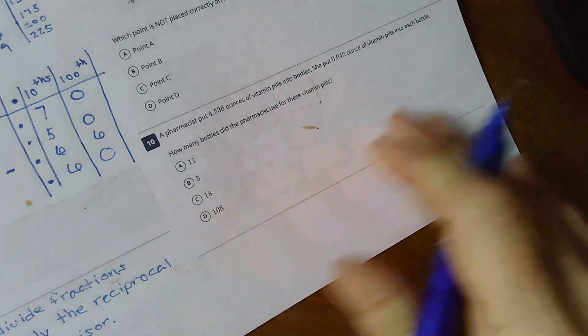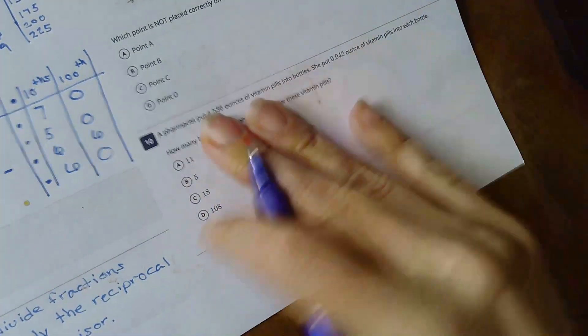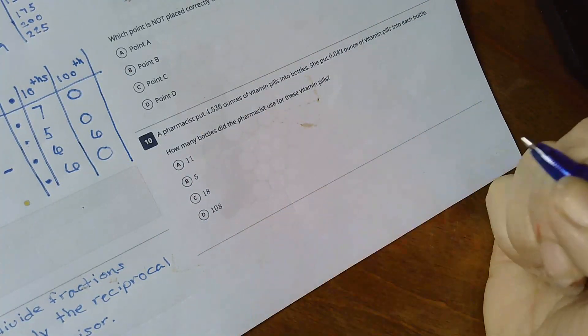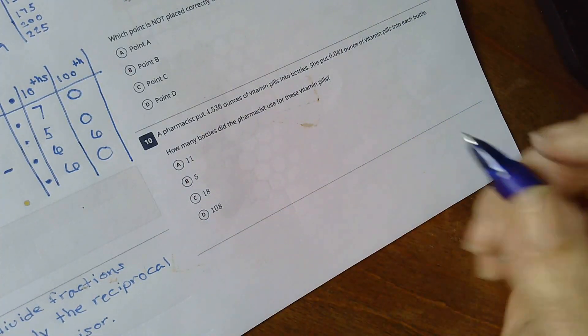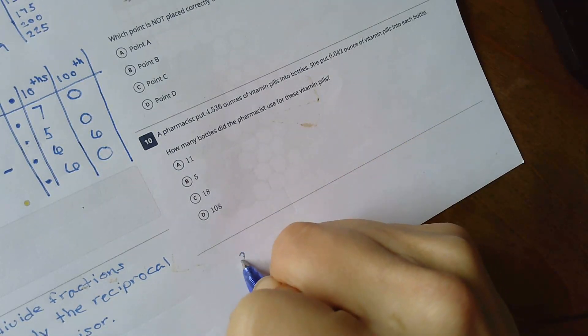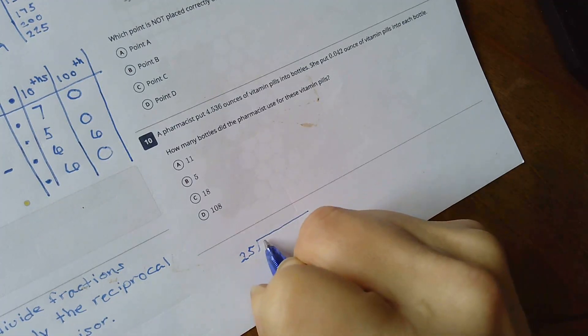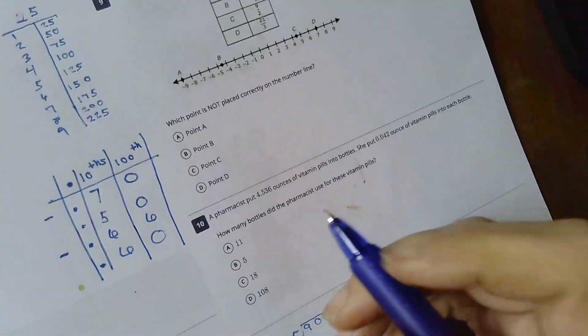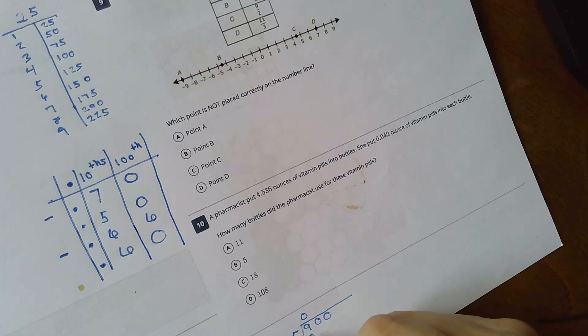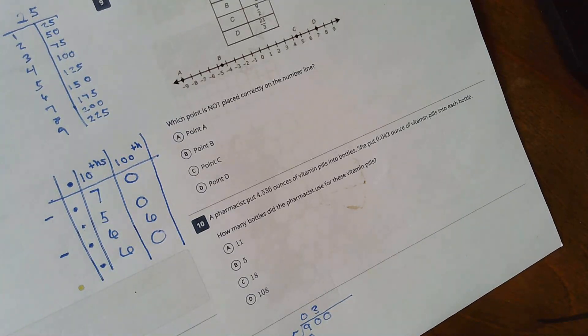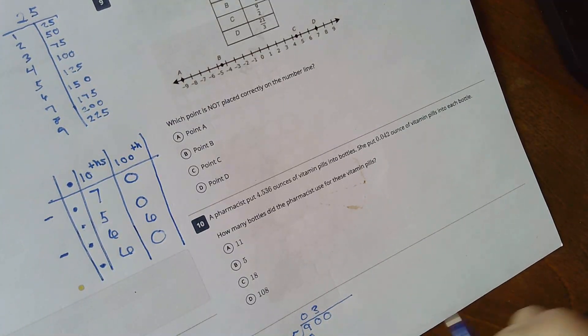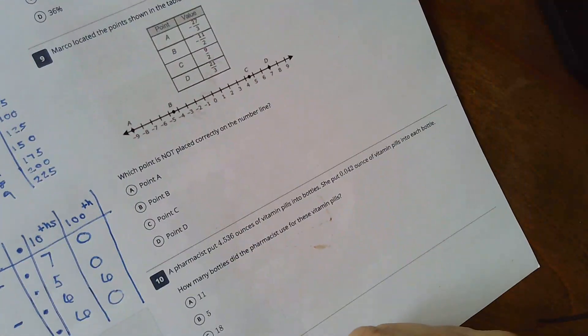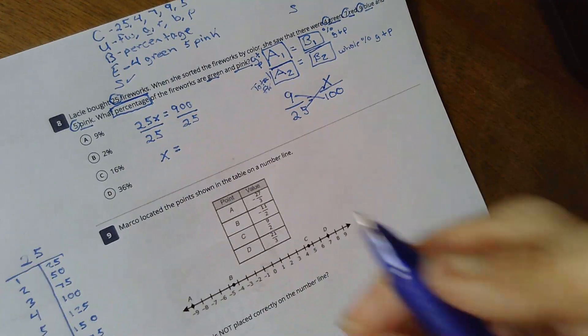And now I'm going to divide. So how many times can 25 go into 90? Well, they can go three times. But it cannot go into nine. So I'm going to bring that down. That's 75. How many times can it go into 150? Six. Okay. So my answer is D.